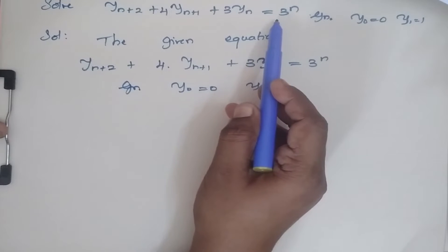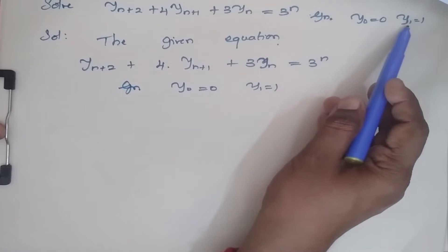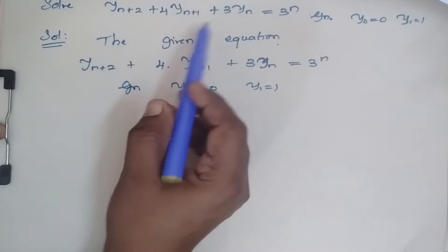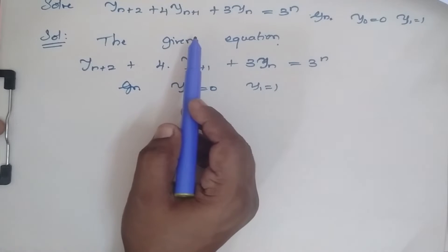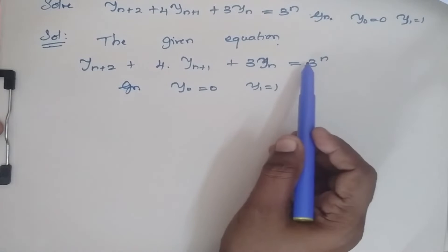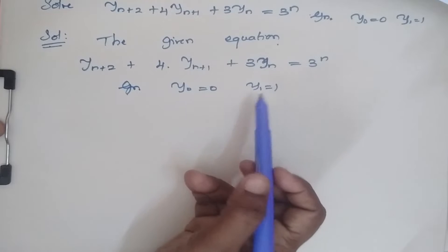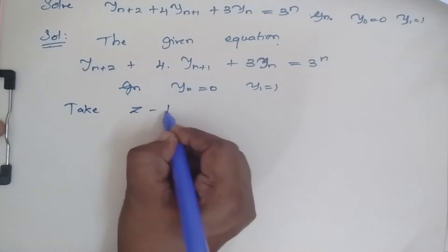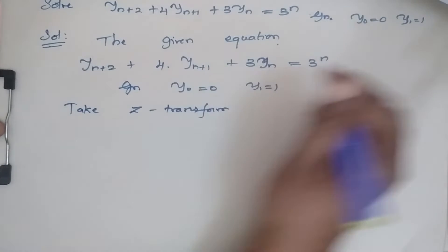Let's solve the given equation where y(0) is equal to 0 and y(1) is equal to 1. We are going to solve the equation using Z-transform and inverse Z-transform. The given equation is provided, along with the initial conditions y(0) = 0 and y(1) = 1. Now take Z-transform on both sides of this equation.